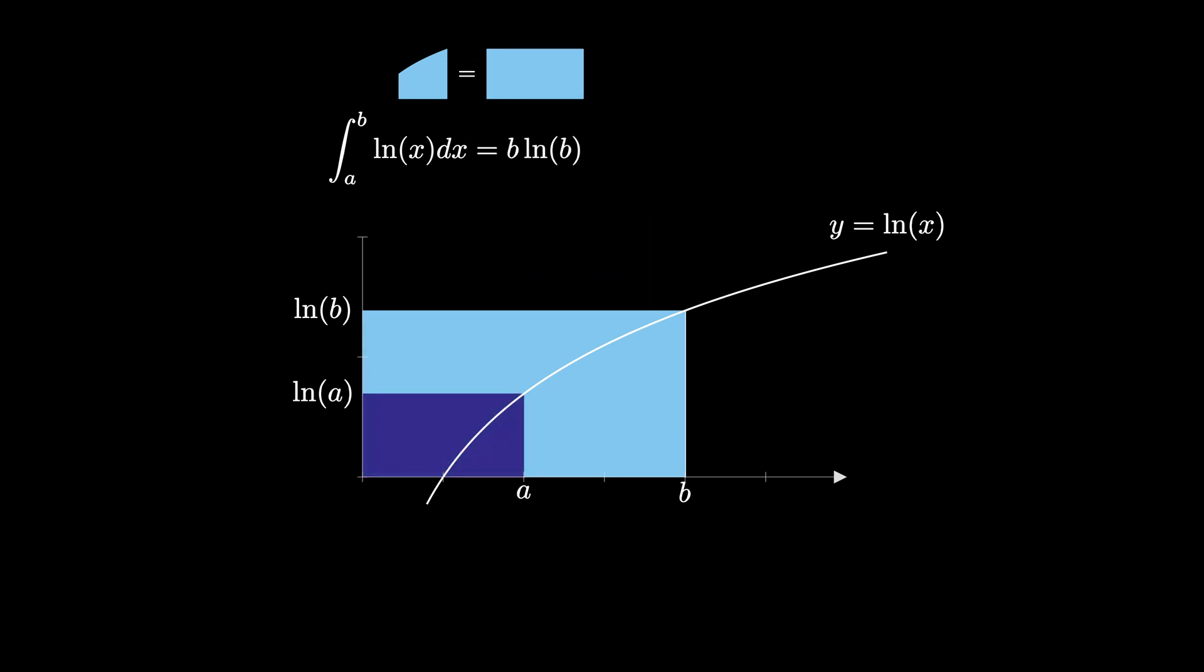Then we can remove the area of this smaller rectangle, which is an a by natural log of a rectangle so has area a times the natural log of a. Finally, we also have to remove this region right here.